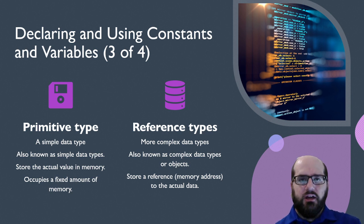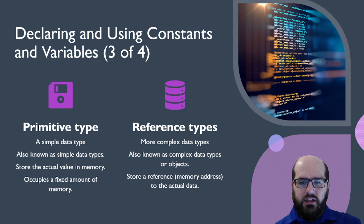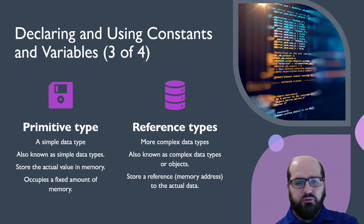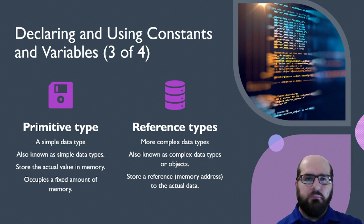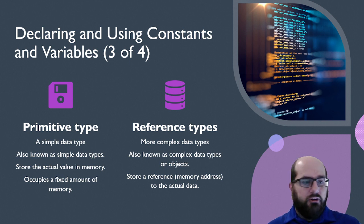A reference type is called a reference type because you're referencing a memory location for the value, and it stores whatever attributes and methods you've placed in there. It's really unknown how much memory you may have to allocate for a reference type of data. All strings are reference types of data.